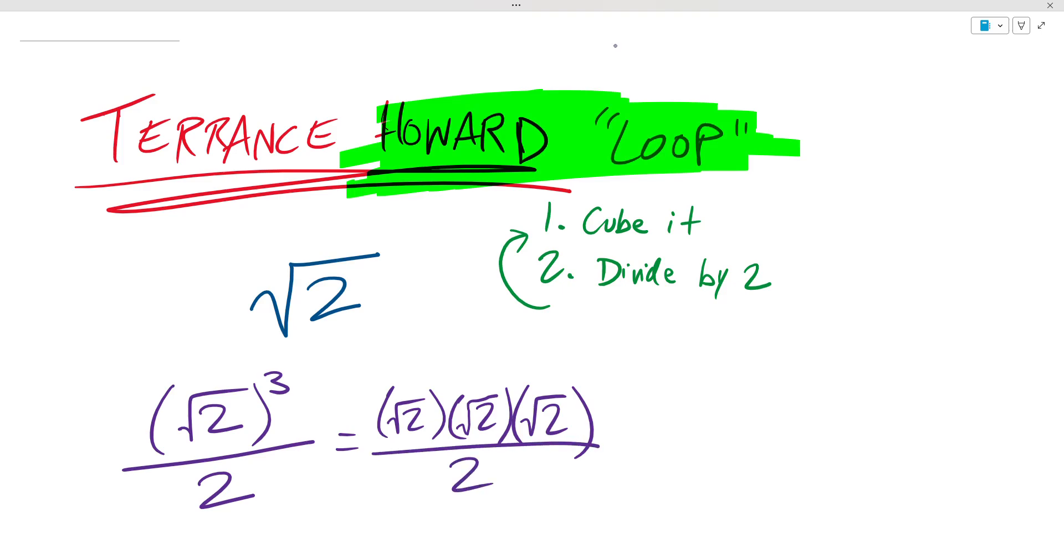What happens here is square root two times square root two simplifies to just being two, because when you multiply a square root times another square root and the radicand is the same, it just becomes what the radicand is. So this simplifies to two root two over two. Then lo and behold, these two twos cancel out.